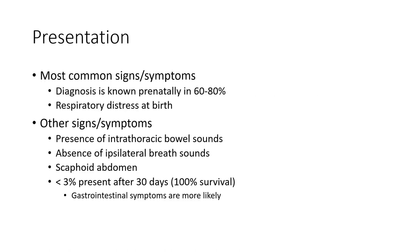Presentation, most common signs and symptoms. Diagnosis is known prenatally in 60% to 80%, respiratory distress at birth. Other signs and symptoms: presence of intra-thoracic bowel, absent of epsilon thoracic bowel, scaphoid abdomen.